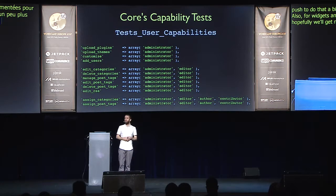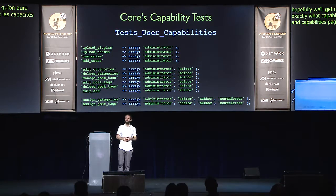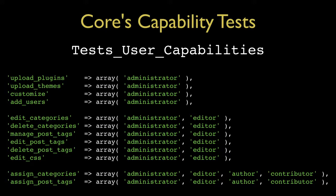If you want to understand exactly what capabilities every role in WordPress has, you can go to the roles and capabilities page on the codex. But if you really want to understand it, there's a class in the WordPress test suite called tests_user_capabilities — for every single capability in WordPress, it lists all of the roles that can perform it. It also means that as we make changes to WordPress core, we can be assured we don't accidentally introduce the ability for a role to perform an action they shouldn't.